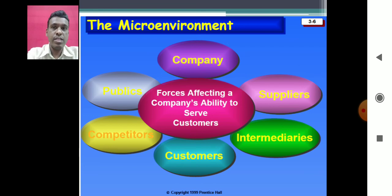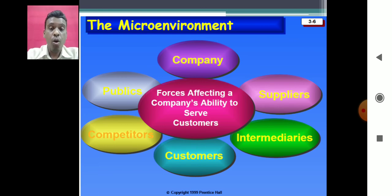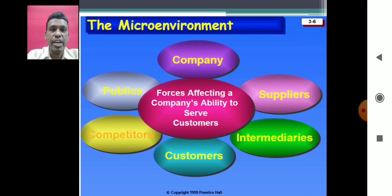The next important factor is competitors. Competitors are companies, business units, or organizations trying to get the same customers or the same market segment as we are. The marketing concept states that to be successful, an organization must provide greater customer value and satisfaction compared to what competitors are providing. Marketers must gain strategic advantage by positioning their offerings strongly against competitors' offerings in the minds of the customers.